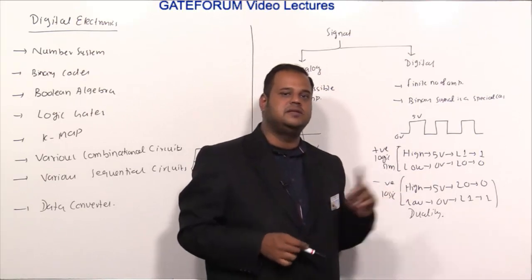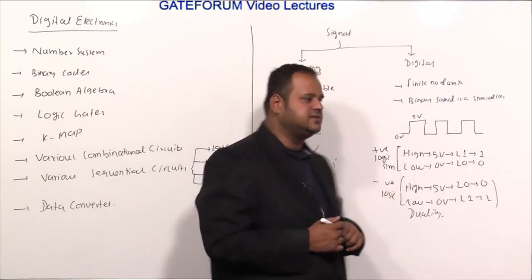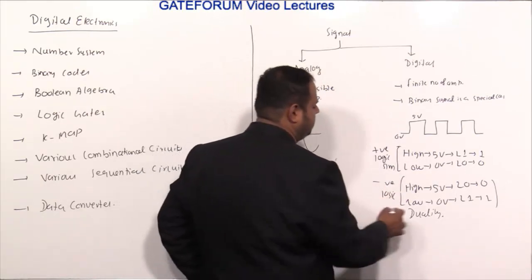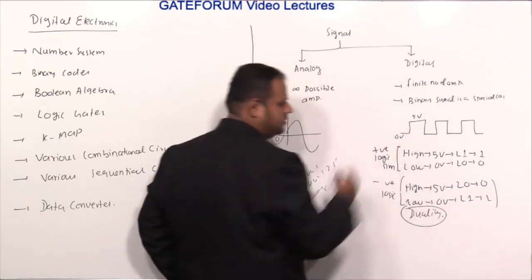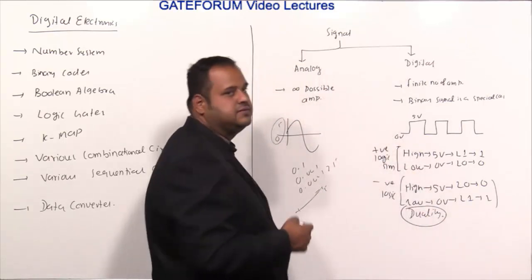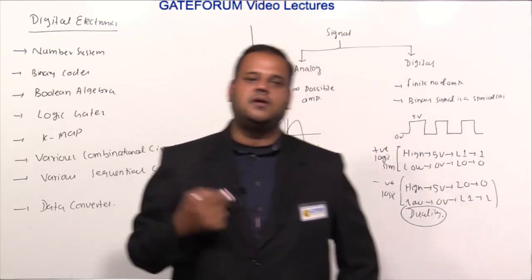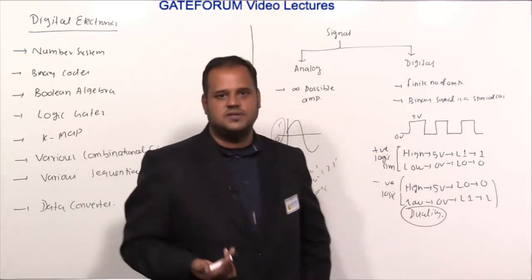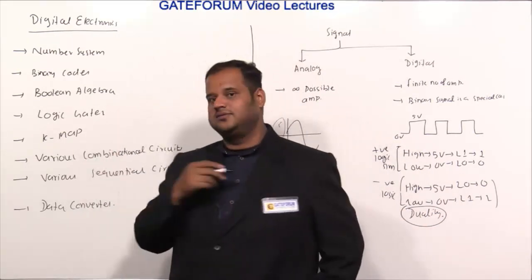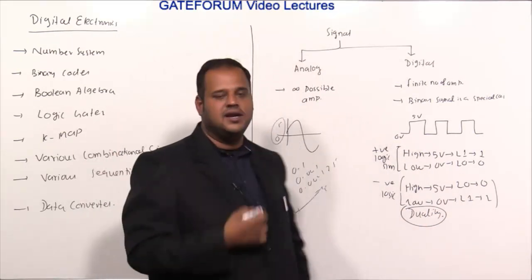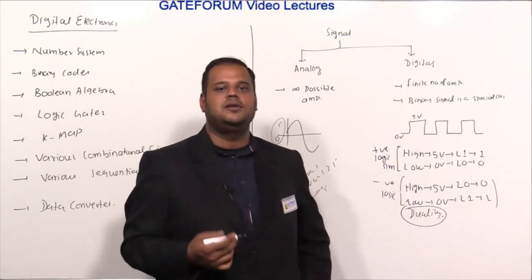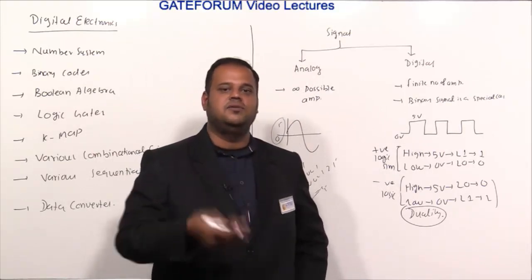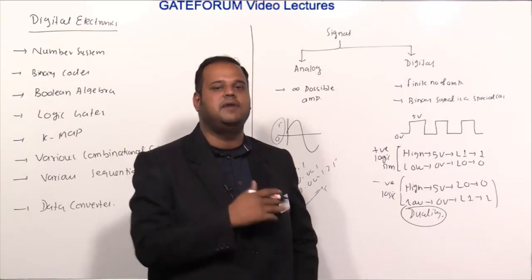There is a significant difference between positive logic and negative logic systems, and one logic system can be obtained from the other using a concept known as duality. In the Boolean algebra chapter, we will discuss duality and learn how to convert an expression in positive logic into negative logic and vice versa.